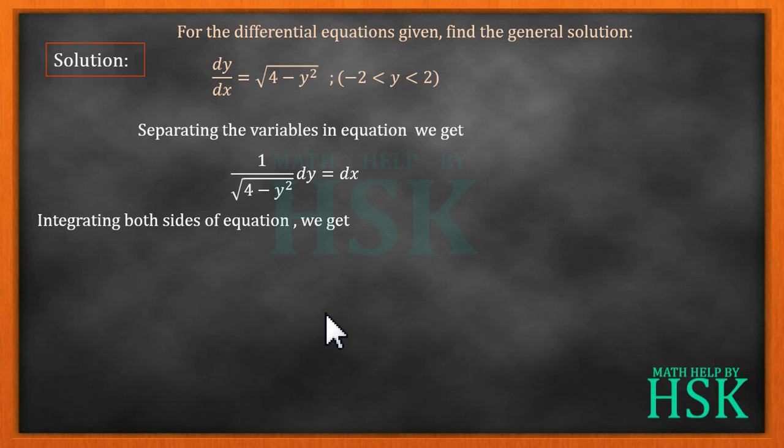Now I am going to integrate the equation, so I am going to get this as integration of one upon square root of four minus y squared dy equals integration of dx plus c.